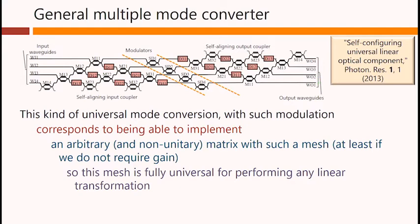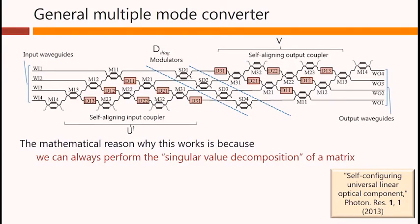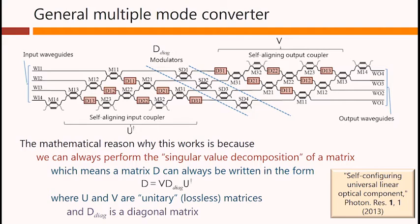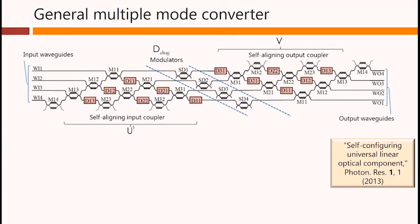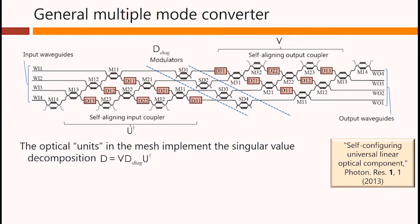So this mesh is fully universal for performing any linear transformation, from the inputs on the left to the outputs on the right. The mathematical reason why this works is because we can always perform the singular value decomposition of a matrix. That is, we can always write a matrix in the form of a product of three matrices. A unitary one, a diagonal one, and another unitary one. The optical units in this mesh implement the singular value decomposition. Here is the matrix U-dagger, a unitary matrix. Here is the diagonal matrix, and here is the second unitary matrix, V.